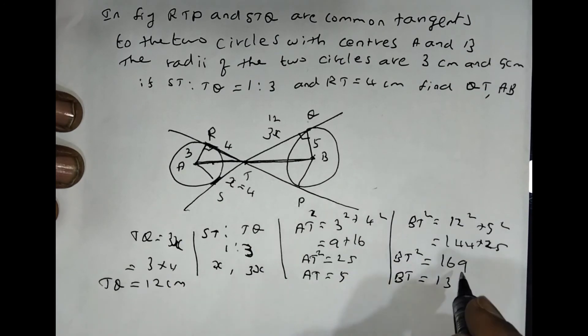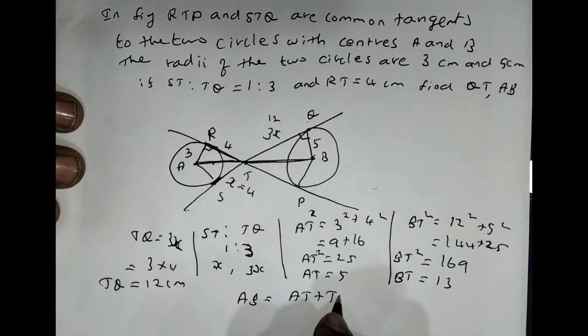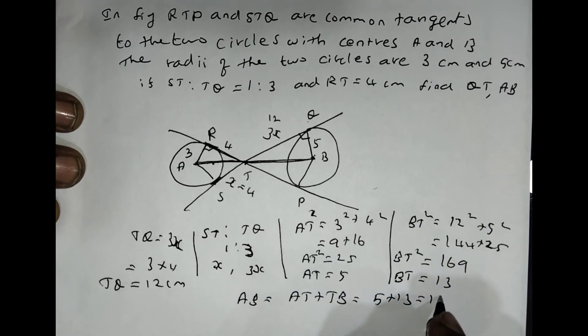Then BD equals 13. So BD squared is 169, then BD equals 13. If you want to find the length of AB, AB equals AD plus DB. That is 5 plus 13 equals 18cm.